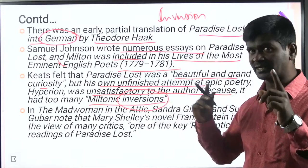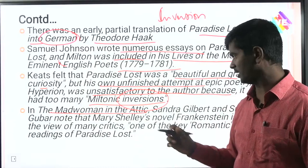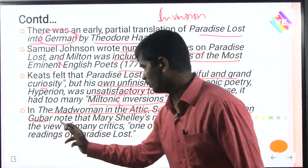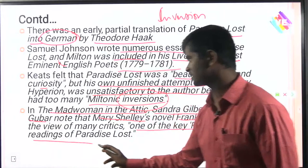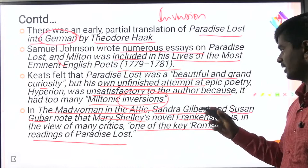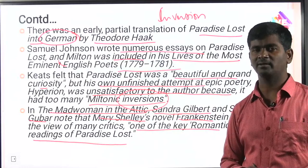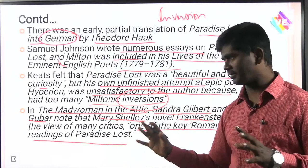The Madwoman in the Attic is a popular Gothic novel by Sandra Gilbert and Susan Gubar. In it, they note that Mary Shelley's novel Frankenstein is, in the view of many critics, one of the key Romantic readings of Paradise Lost. So reading Frankenstein is just like reading Paradise Lost — that is how difficult and layered the text of Paradise Lost is.